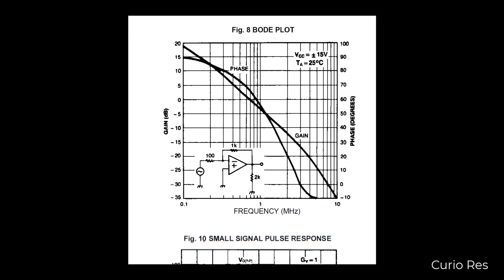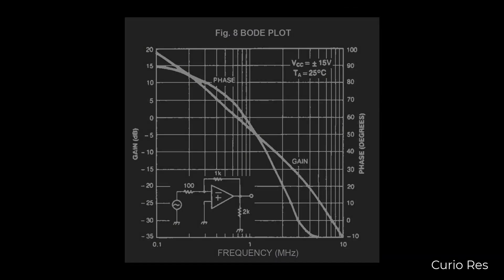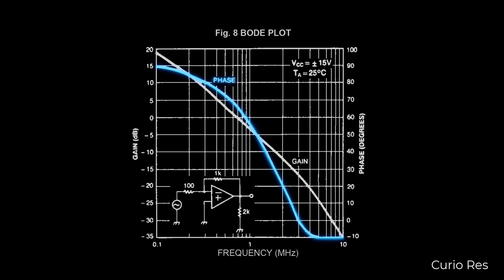Here's the Bode plot from the datasheet of an op-amp. What does it mean? What are the phase and gain? Where did the plot come from?